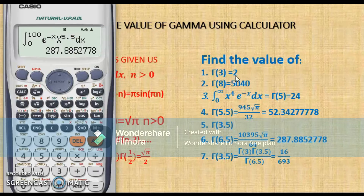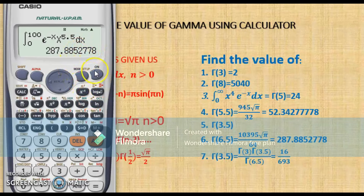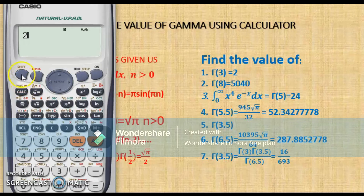I want to find gamma of 3, which we know should be 2 factorial. That is, you have to express 3 as n plus 1, so n plus 1 equals 3, meaning n equals 2. So I take 2 factorial: I type 2, then shift, then x to the power negative 1 to get the factorial sign, hit the equal sign, and the answer it gives is 2.